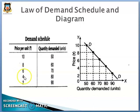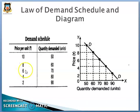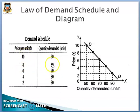Further, as the price increases from 4 rupees to 6 rupees, quantity demanded decreases from 80 units to 70 units. Again, as price increases from 6 to 8 rupees, quantity demanded decreases from 70 to 60 units. And as price goes up from 8 to 10 rupees, quantity demanded decreases from 60 to 50 units. So as price rises, quantity demanded decreases, exactly as explained by the law of demand.